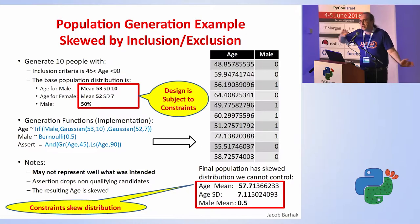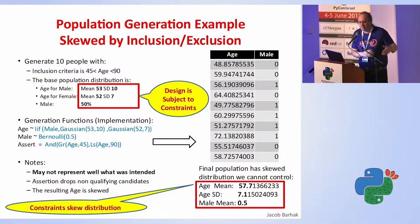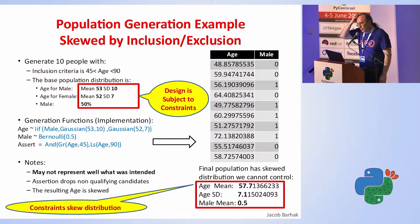This happens a lot in clinical trials, because they have very long lists of inclusion and exclusion criteria, depending on what trial they run. Therefore, the distributions they publish are skewed in some way, and you don't really have information about that skewing. But you still want to somehow imitate them.